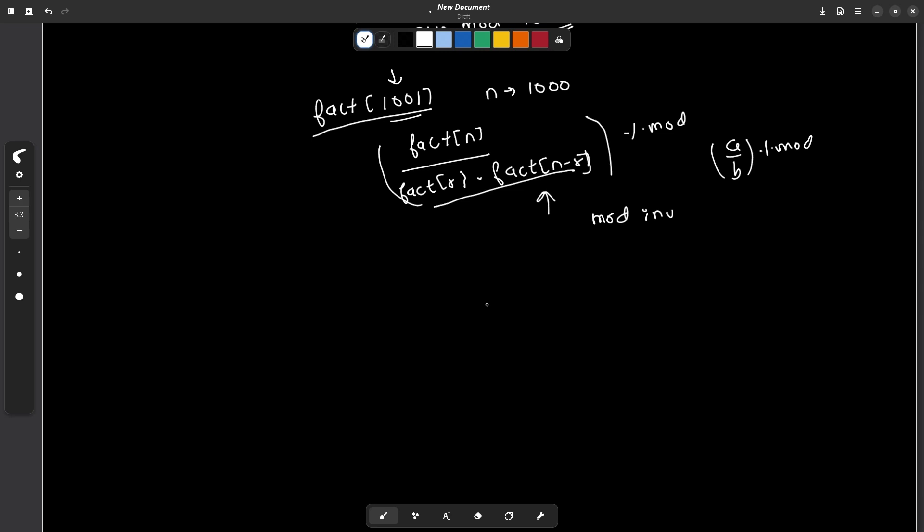It is the modulo multiplicative inverse of the denominator value. Basically what you'll have to do is calculate the denominator value: denominator equals fact of r into fact of n minus r.